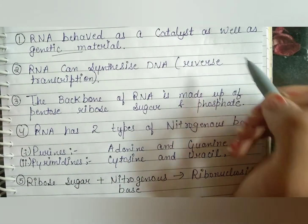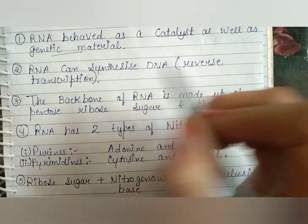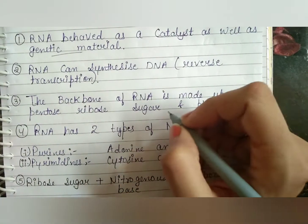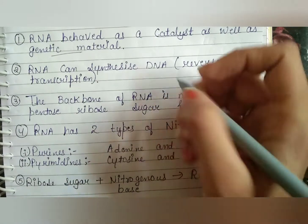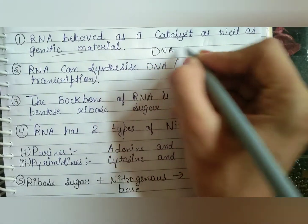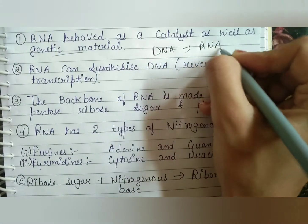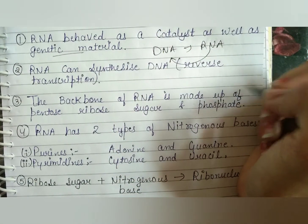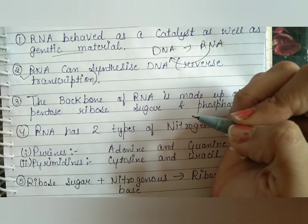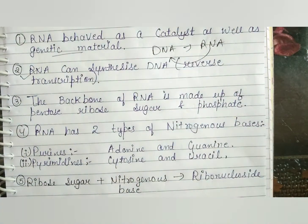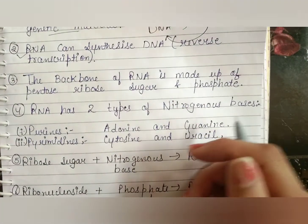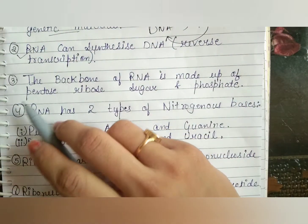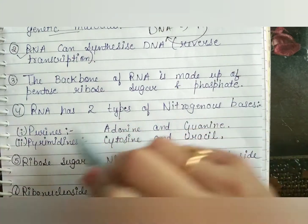RNA can synthesize DNA — that is reverse transcription. According to the central dogma, DNA makes RNA, but when RNA makes DNA, that is reverse transcription. The enzyme which is used for this process is called reverse transcriptase.